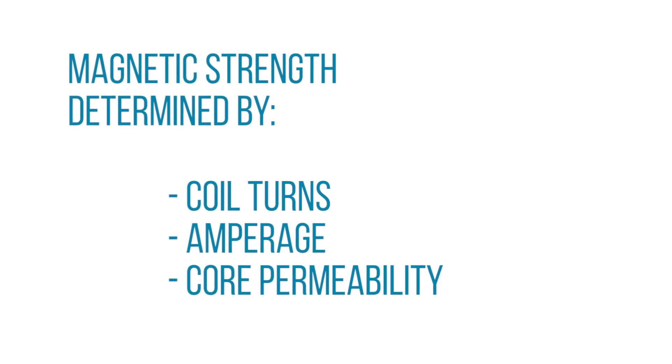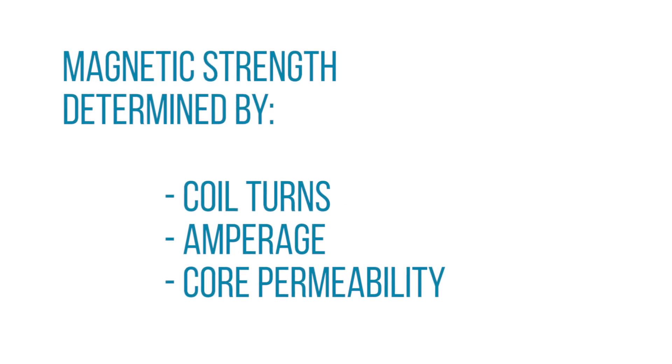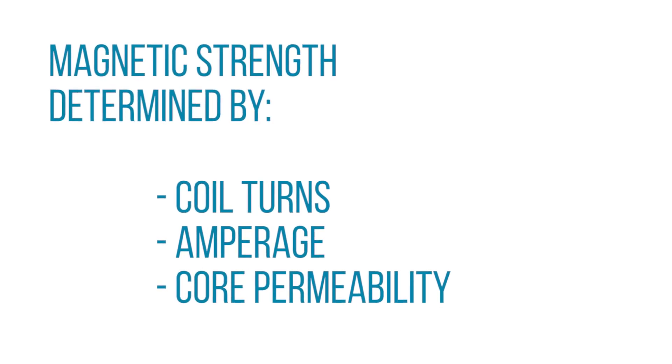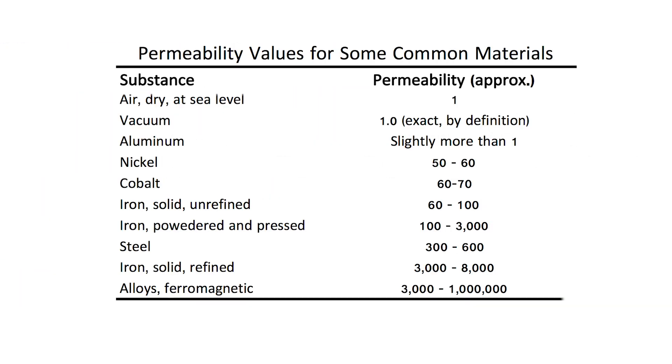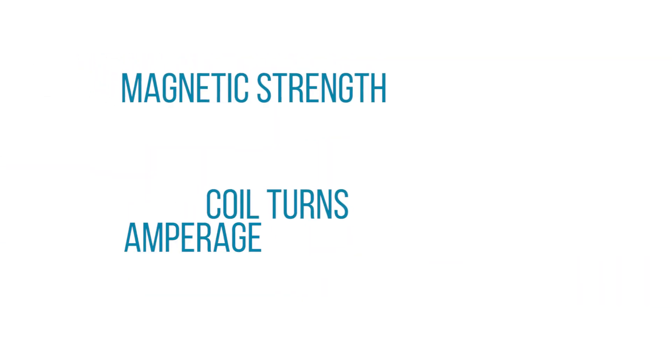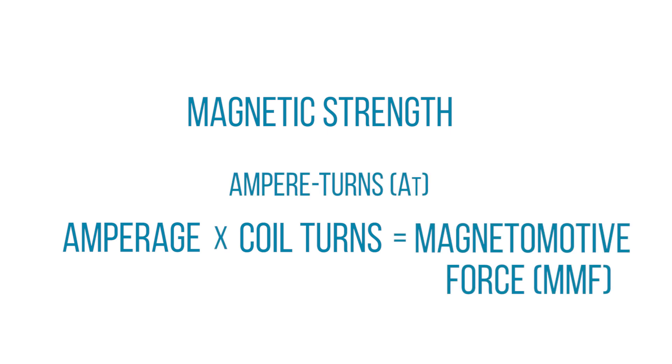The strength of an electromagnet depends on three factors: the number of turns in the coil, the amperage of the current, and the permeability or reluctance of the core. The core of a coil can be empty, but for electromagnets, a ferromagnetic material is often used instead due to its high permeability. The remaining two factors are combined to calculate the ampere turns, or the magnetomotive force.